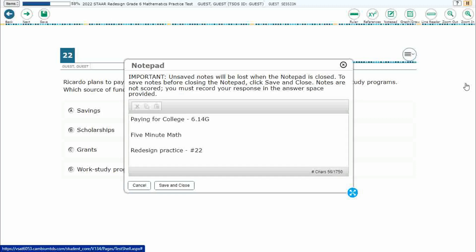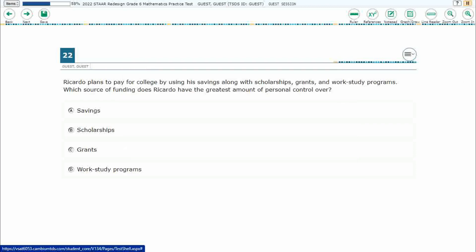Hello and welcome to 5-Minute Math. Today we are looking at the sixth grade concept of paying for college. This is standard 6.14 G in the great state of Texas and we are using item number 22 of the redesigned practice online STAAR test.